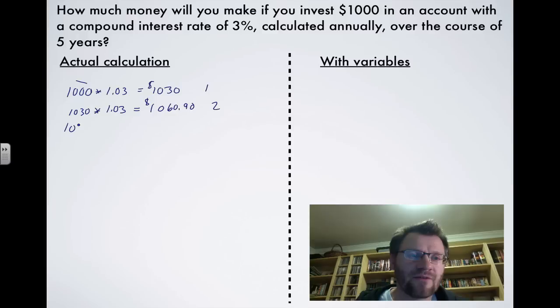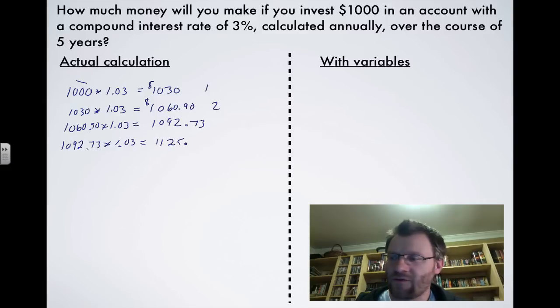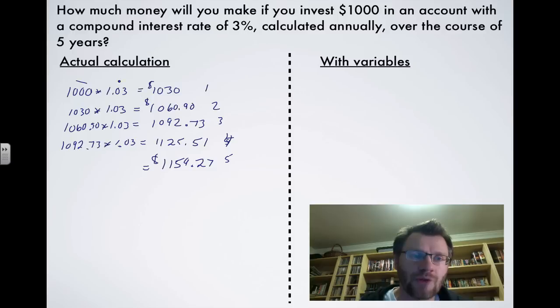And we take the 1060.90, multiply it by 1.03, and we get 1092.73. And then we take the 1092.73, multiply it by 1.03, and we get 1125.51. You take that, multiply it by 1.03, and you get 1159.27. So that's the concept of compound interest. You keep on making money on the total amount of money that's in the account.